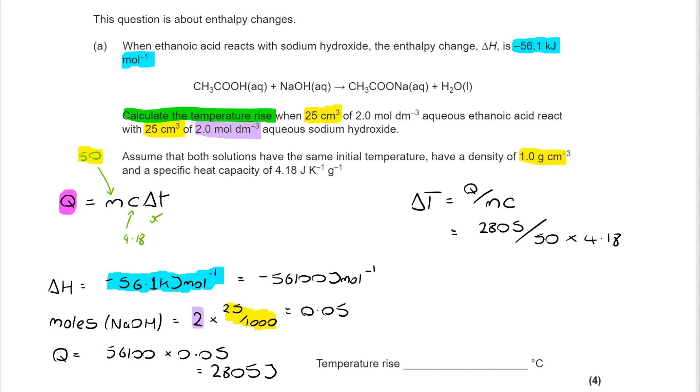From there, I can go back to rearrange my Q = MC delta T, and I can put in the figures that I have. My Q is 2,805, my M is 50, and my C is 4.18, as we've already established. From there, I can work out that the overall temperature rise is 13.4 degrees C.